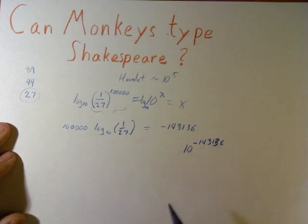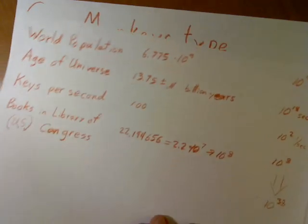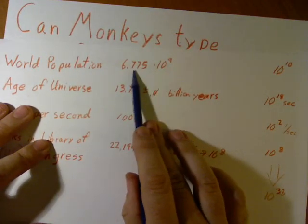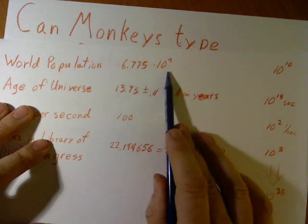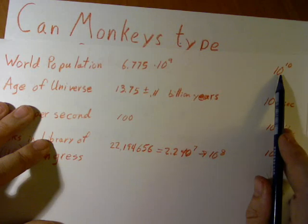Okay, but let's say these monkeys have been, we have a lot of these monkeys. Let's say we have, well, let's see, world population is 6.75 times 10 to the ninth, so 6.7 billion people. Let's say we have even a bit more monkeys. 10 to the 10th.